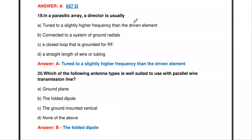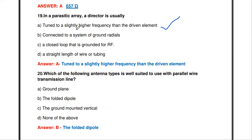The next question: in a parasitic array, a director is usually — tuned to a slightly higher frequency than the driven element, connected to a system of ground radials, a closed loop grounded for RF, or a straight length of wire or tubing? The answer is the first one: the director is tuned to a slightly higher frequency than the driven element.